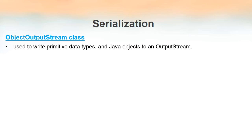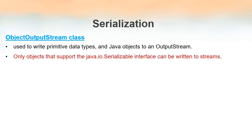Primitive data types include int, float, etc. So along with those data types we can also write objects into an output stream by using this class. One thing that we have to remember is only those objects that support the java.io.Serializable interface. That means the interface named Serializable is located inside the package named io, which is inside the package named java. So only those objects which support this interface can be written into streams.